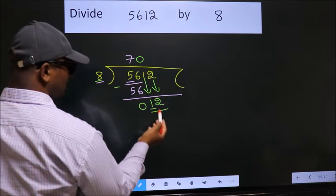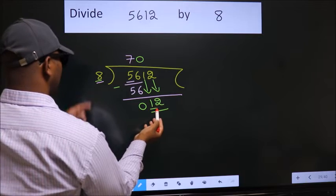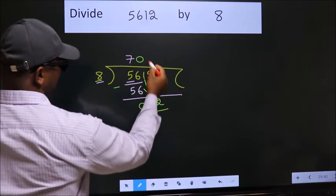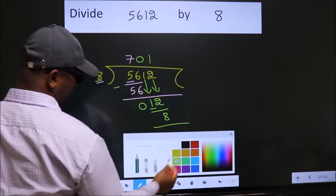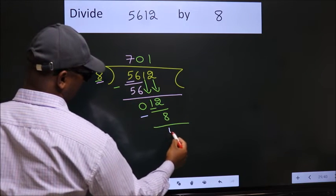So 12. A number close to 12 in 8 table is 8 once 8. Now we subtract. We get 4.